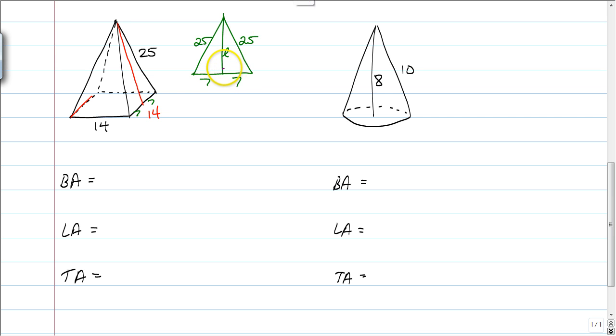And our base length is 14, which is split to 7 and 7. So, you're going to have to use your good buddy, the Pythagorean theorem, quite often in this unit. So, we're going to just have to do 7 squared plus L squared is equal to 25 squared and find out that our slant height is 24. So, we have that information.